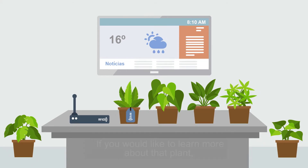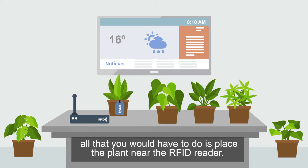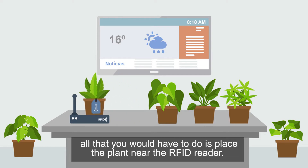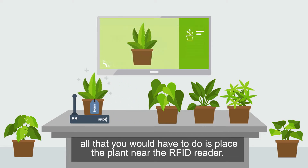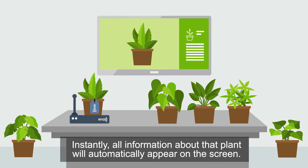Here's how. If you would like to learn more about that plant, all that you would have to do is place the plant near the RFID reader. Instantly, all information about that plant will automatically appear on the screen.